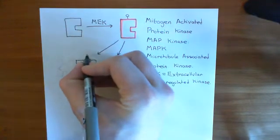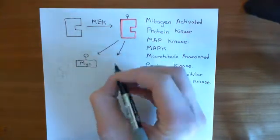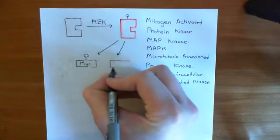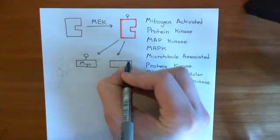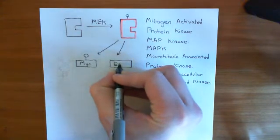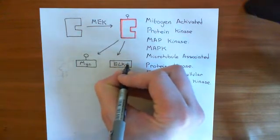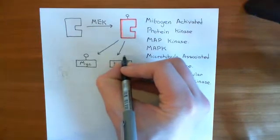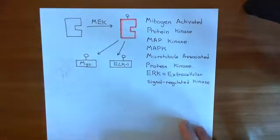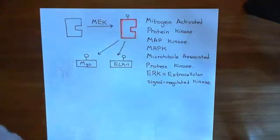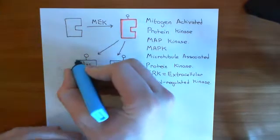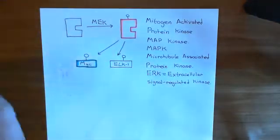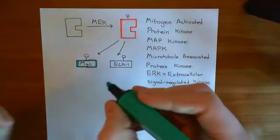This enzyme is going to stick a phosphate group onto MYC and activate it. Another transcription factor it targets is known as ELK-1. The mitogen-activated protein kinase is going to stick a phosphate group onto ELK-1 and activate it. So it activates two transcription factors: MYC and ELK-1.